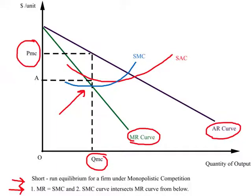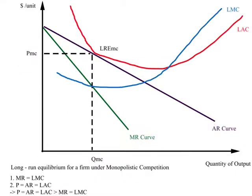In the short run it is entirely possible for a firm under monopolistic competition to make profits, incur losses, or be in a situation of no profit no loss — very similar to what we discussed for a monopolist. If you do not remember, you can watch the video on monopoly.